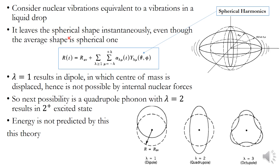We consider nuclear vibrations equivalent to the vibrations in a liquid drop. The nucleus leaves its spherical shape instantaneously even though the average shape is spherical. During vibrations it becomes a non-spherical shape. The dashed line represents the average spherical shape and the solid line corresponds to the non-spherical shape during vibration. This can be represented by R(T), the distance to the surface of the nucleus.